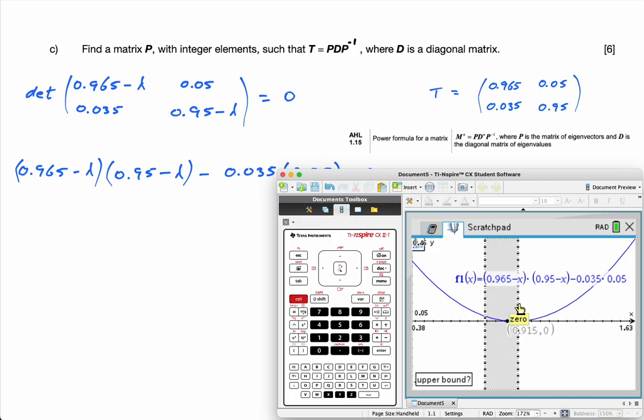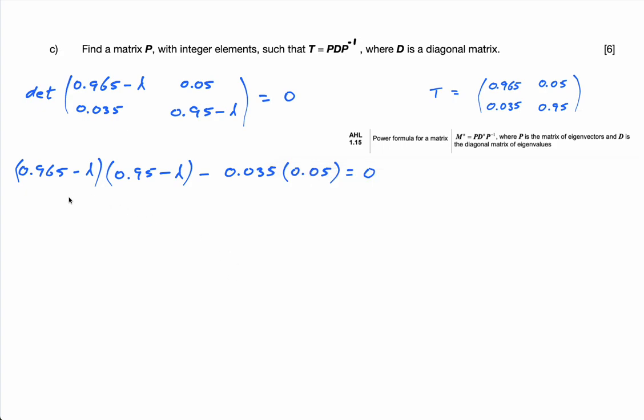So these are my two solutions, 0.915 because it's where it equals 0, and 1. So lambda equals 0.915 and lambda equals 1. So these are my two eigenvalues.